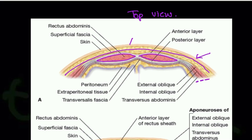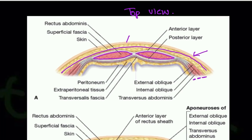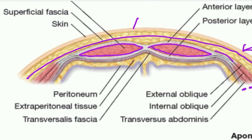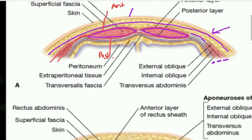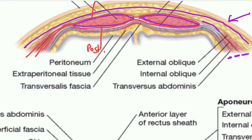In this cross-sectional view you can see the aponeuroses going towards the medial side. The rectus sheath is visible as the white covering around rectus abdominis — the anterior wall formed by external oblique and half of internal oblique, and the posterior wall by transverse abdominis and the other half of internal oblique. Behind that is transversalis fascia, and then the peritoneum with organs behind it.